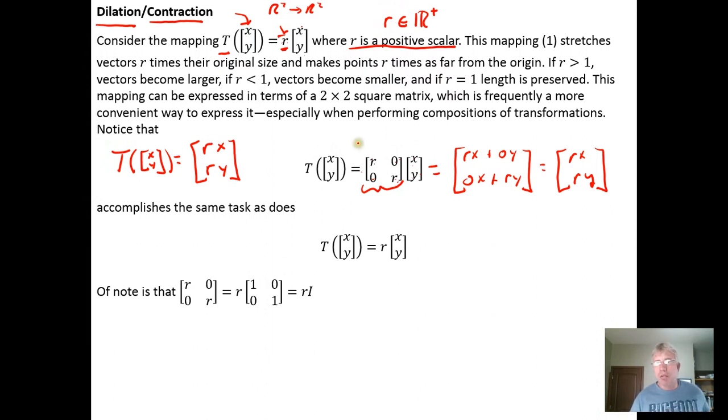But the idea is, what if you wanted to do multiple transformations to a vector? So let's say you had transformation 3, transformation 2, transformation 1, where each of these transformations is represented by a matrix. Well, then you can just take the product of the transformations.